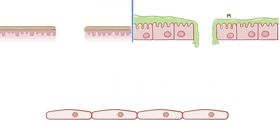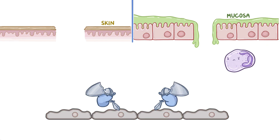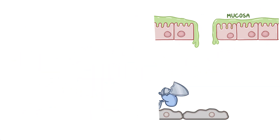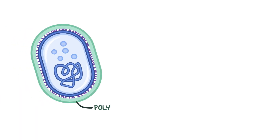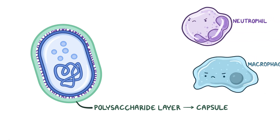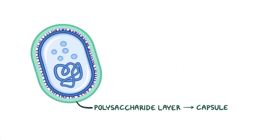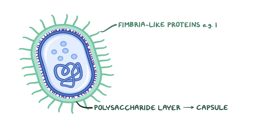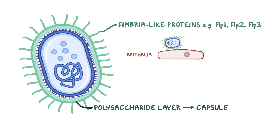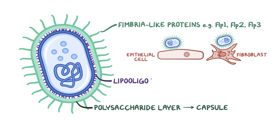Haemophilus ducreyi enters the body through mucosal and skin breaks and has a number of virulence factors that help it attack and destroy host cells and evade the immune system. It is encapsulated — it has a polysaccharide capsule that acts like a shield protecting the bacteria against phagocytic cells like macrophages and neutrophils. On the capsule there are fimbria-like proteins such as Flp1, Flp2, and Flp3, used to attach to subcutaneous epithelial cells and fibroblasts. Underneath the capsule there's an outer membrane containing lipooligosaccharide (LOS), which is also involved in cell adhesion.